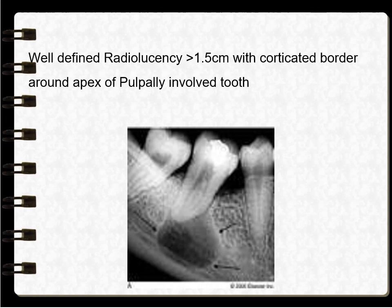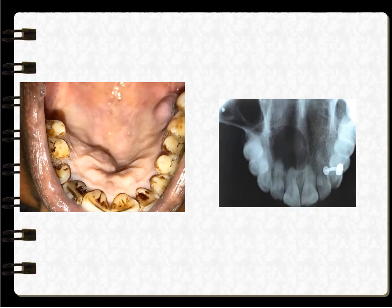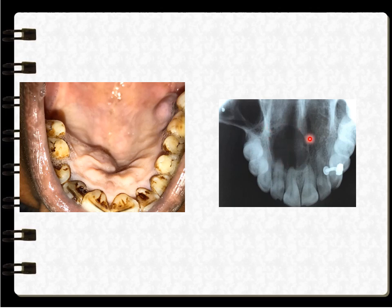On radiograph, a well-defined radiolucency greater than 1.5 cm with a corticated border can be observed. The corticated border appears as a radiopaque border surrounding the radiolucency. Clinically, swelling can be seen in the palatal area. On the radiograph, radiolucency is present at the apical area of the central and lateral incisors with a peripheral corticated border.